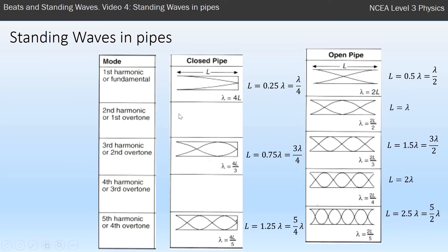This is why we don't have a name for the one that's missing here, because the first one's a quarter of a wave in the closed pipes, but the third one is three quarters of a wave. It's three times bigger, so that's why it's called the third harmonic, because it's three times bigger than the first harmonic.